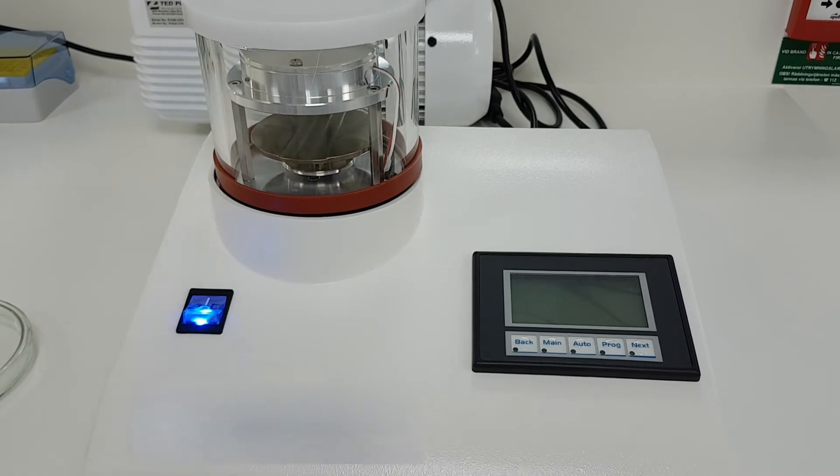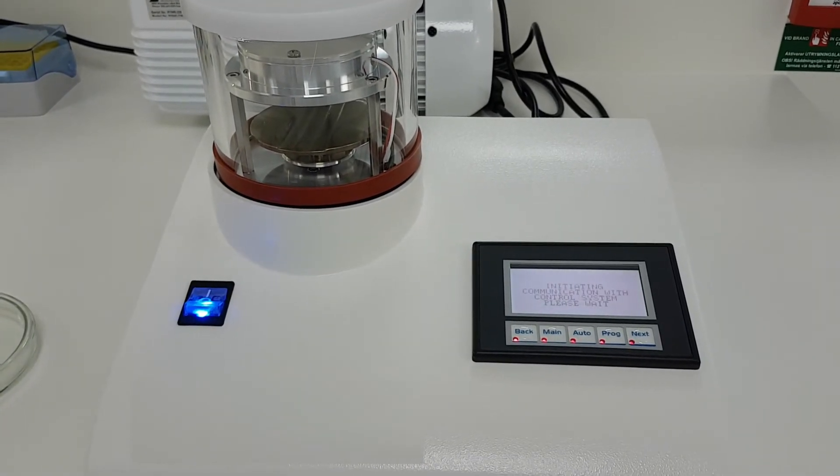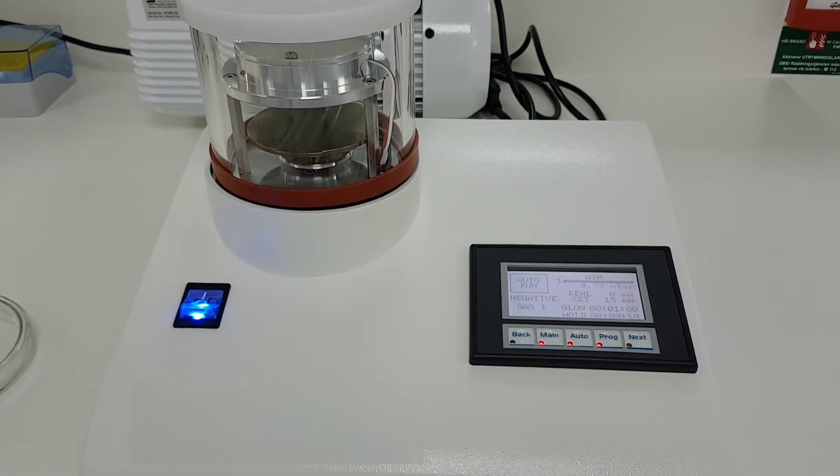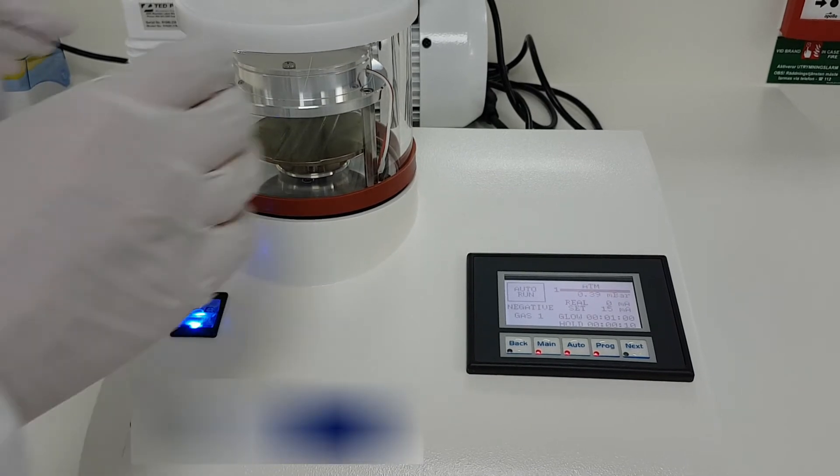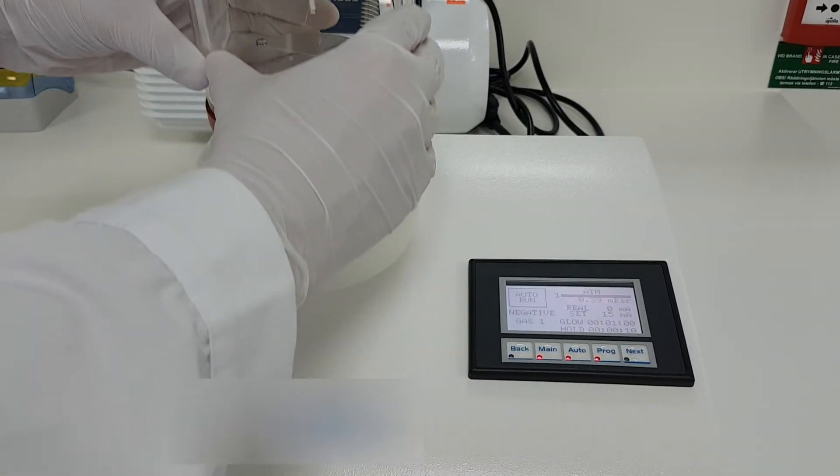Turn on the glow discharge unit. Remove the glass lid of the glow discharge unit. Place it on a clean surface to avoid dust contamination.